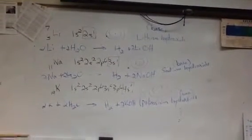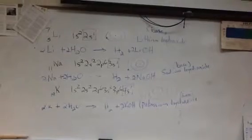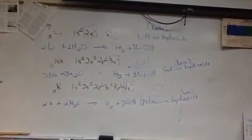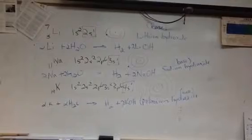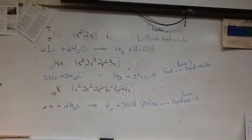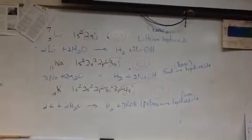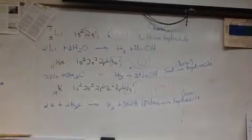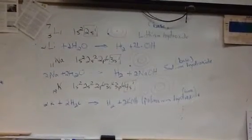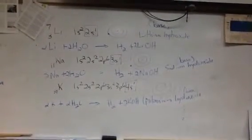So they react similarly, they behave similarly, but they get a little more energetic as you move down the family. Now if we could predict about rubidium, which is just below potassium, and cesium, which is below rubidium, we might predict that they are reactive to a greater degree than the other ones. So they get pretty, pretty energetic.